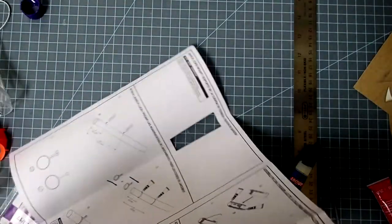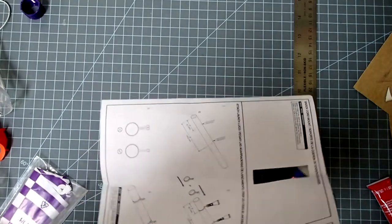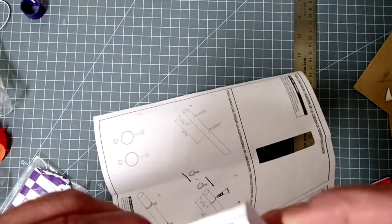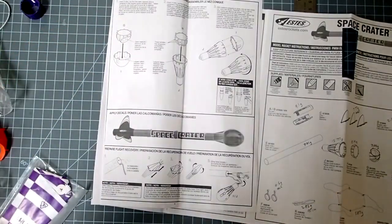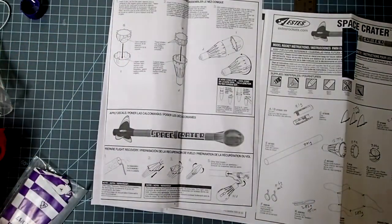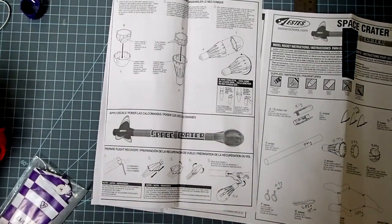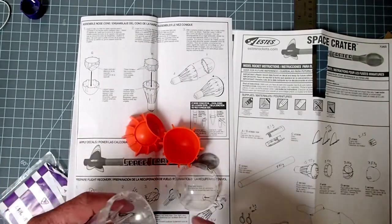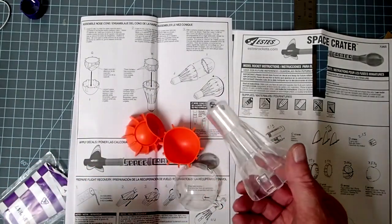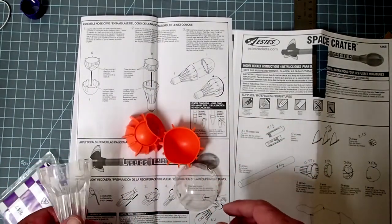And our last assembly is the nose cone payload section here. Now, mine actually came with this all assembled, and then I took it apart again so that I could weigh all the components for simulation software.